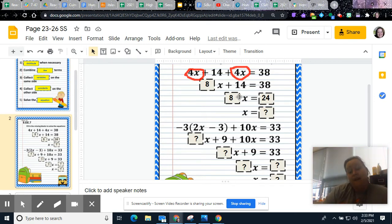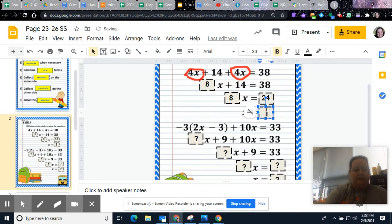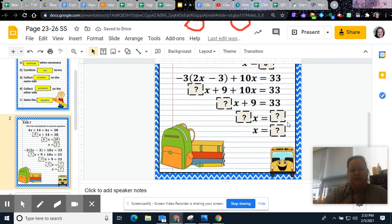And then now it's like you have 8 money bags equals 24 coins. So then when you go through and you separate or divide, then since this is 8 times x, you divide. 24 divided by 8 is 3. Now let's look at this one down here.